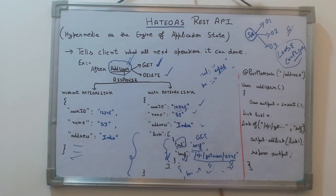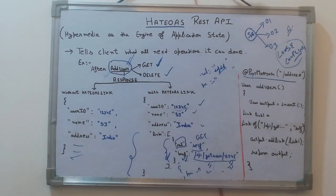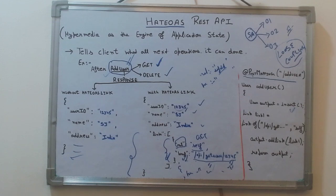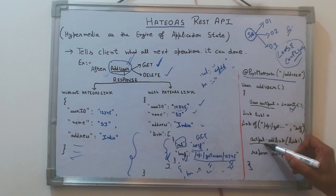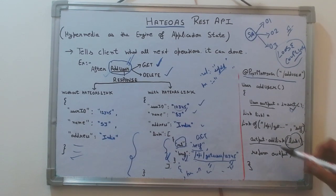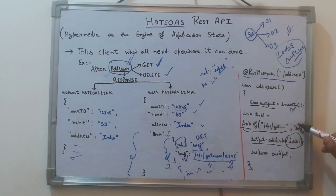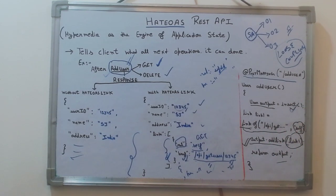The main purpose of HATEOAS is to achieve loose coupling between client and server. Here is a simple method where I am adding a HATEOAS link to the response. At the POST mapping '/user', after inserting a user and getting a response object, I call 'add link' and add a link using Spring Boot's HATEOAS — 'Link.of()' — providing the URI and the relation. This link gets added and returned in the response.